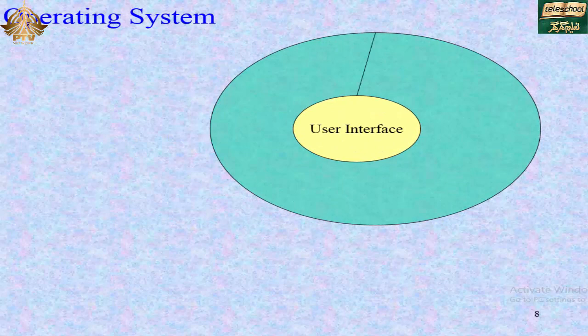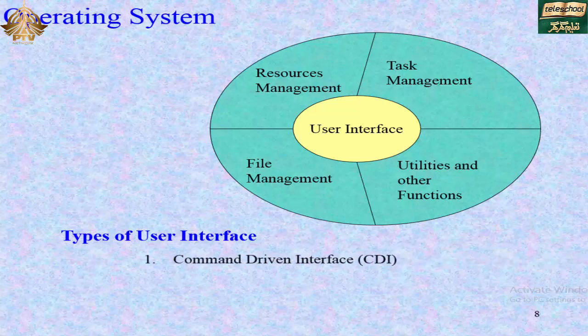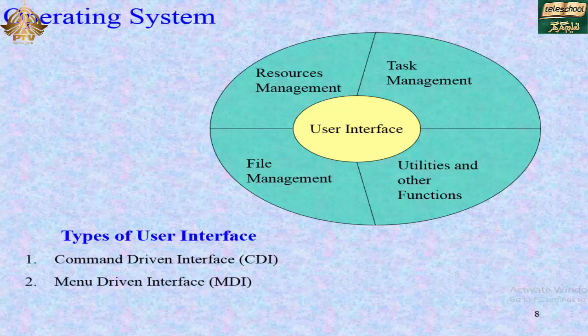The operating system components include: user interface, resource management, task management, utilities and other functions, and file management. The user interface is divided into types: command-driven interface, menu-driven interface, and graphical user interface (GUI).